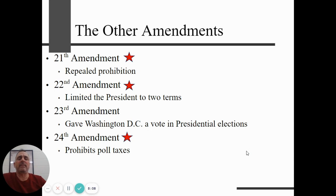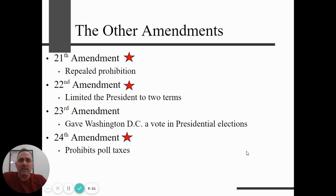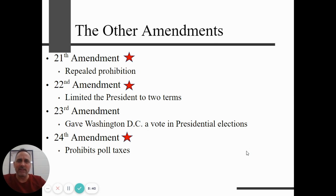The 23rd Amendment gave Washington, D.C. three electoral votes in the presidential election. Since D.C. isn't technically in any state, those people in our country's capital weren't voting for president, which seemed a bit harsh. The 24th Amendment dealt with Southern states trying to keep African Americans from voting — it prohibits a poll tax. You can't charge people to vote, give them a literacy test, or an intelligence test. All those hoops Southern states were trying to use to keep African Americans from voting were prohibited.